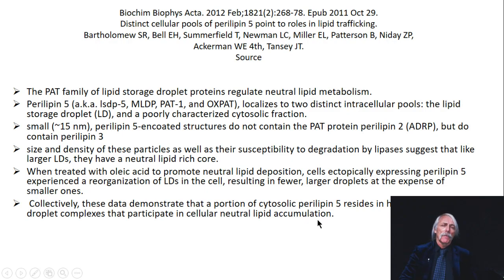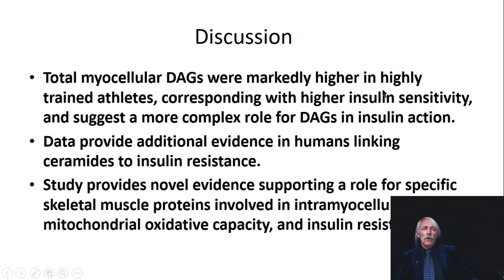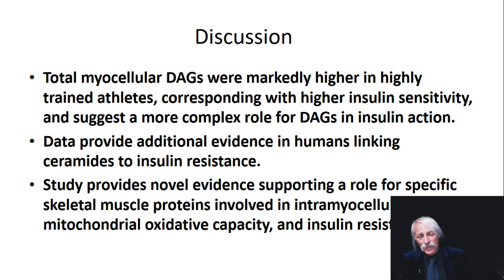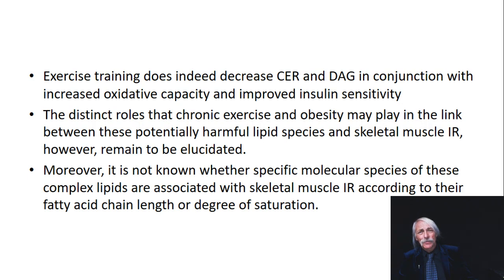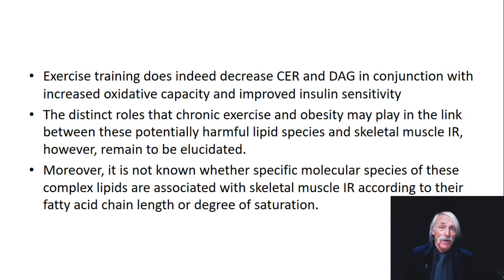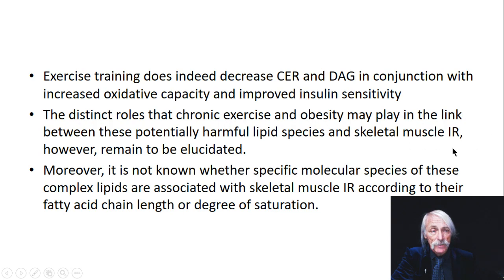Collectively, total cellular diacylglycerol markedly higher in athletes corresponds with higher insulin sensitivity, suggesting a more complex role for DAG in insulin action. The data provides additional evidence linking ceramide to insulin resistance. You can't just talk about how much IMTG is there — you have to talk about all the other players. Exercise training does decrease ceramide and DAG in conjunction with increased oxidative capacity, but a steady-state level isn't necessarily decreased — it just means you're going a lot from TAG to DAG.